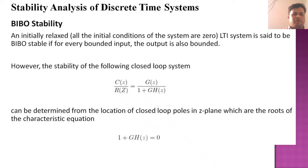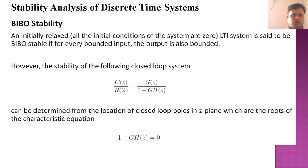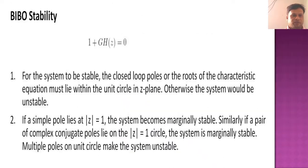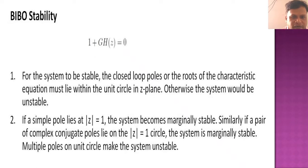The stability of a closed-loop system is classified depending upon the equation C(z)/R(z) equal to G(z) divided by 1 plus G·H(z). This is determined from the location of the closed-loop poles in the z-plane, which are the roots of the characteristic equation 1 plus G·H(z) equals 0. For the system to be stable, the closed-loop poles or roots of the characteristic equation must lie within the unit circle in the z-plane.